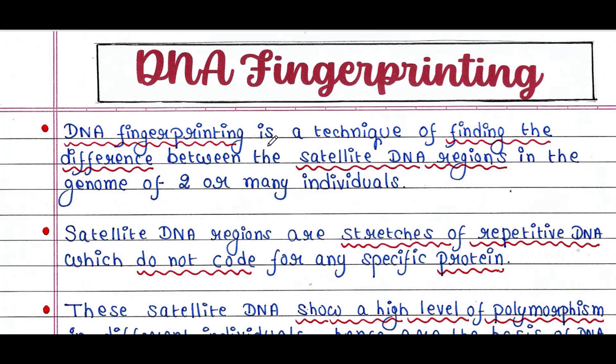DNA fingerprinting is a technique of finding the difference between the satellite DNA regions in the genome of two or many individuals. The name 'fingerprinting' indicates that it is something unique to a person, and it is based on satellite DNA regions.